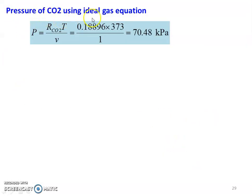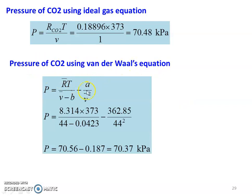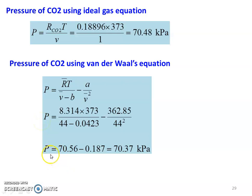Pressure of CO₂ using ideal gas equation: P = R_CO2 × T / v = 0.18896 × 373 / 1 = 70.48 kPa. Pressure of CO₂ using Van der Waals equation: P = R-bar·T / (v-bar − B) − A / v-bar². Substituting: 8.314 × 373 / (44 − 0.0423) − 362.85 / 44². First term: 70.56, second term: 0.187. Van der Waals pressure = 70.37 kPa. Ideal gas: 70.48 kPa; Van der Waals: 70.37 kPa.